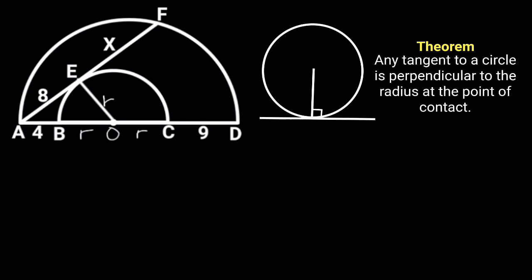Let's recall the circle theorem of tangent and radius. It states that any tangent to a circle is perpendicular to the radius at the point of contact. From this theorem, it follows that angle AEO is equal to 90 degrees.